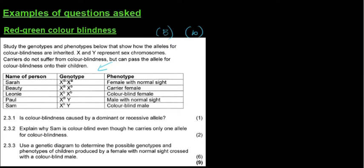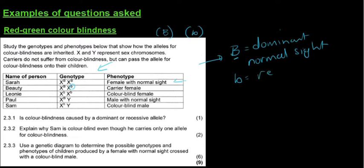Looking at the first person, Sarah, her genotype is X with an allele of capital B and another capital B, and they tell us that this is a female with normal sight. So we can already distinguish from this that B is the dominant trait because it is a capital letter B and it is for normal sight. Then if we look at Beauty, Beauty is a carrier female, so we can see that B over there is a lowercase b.